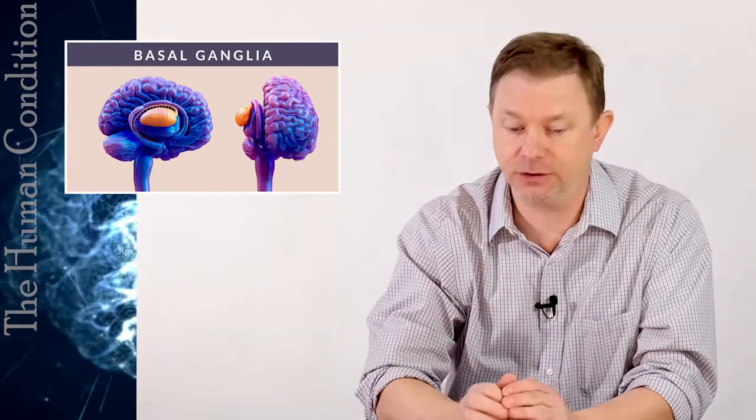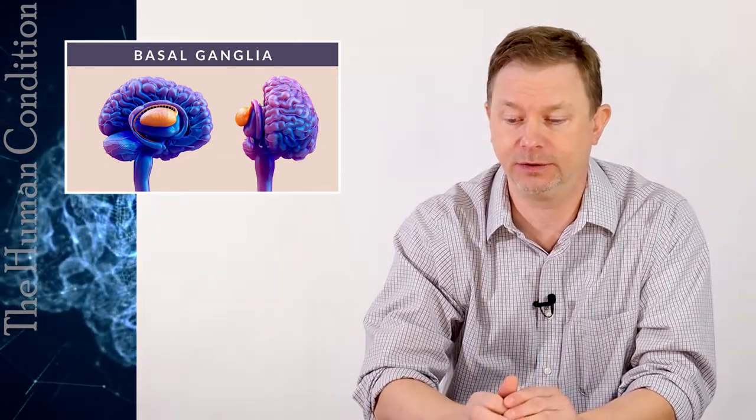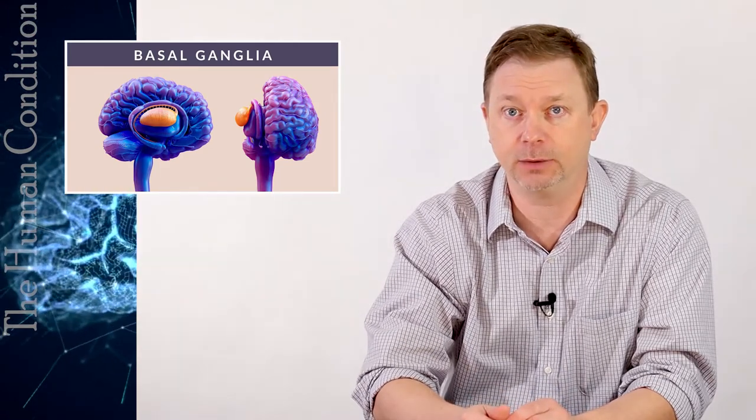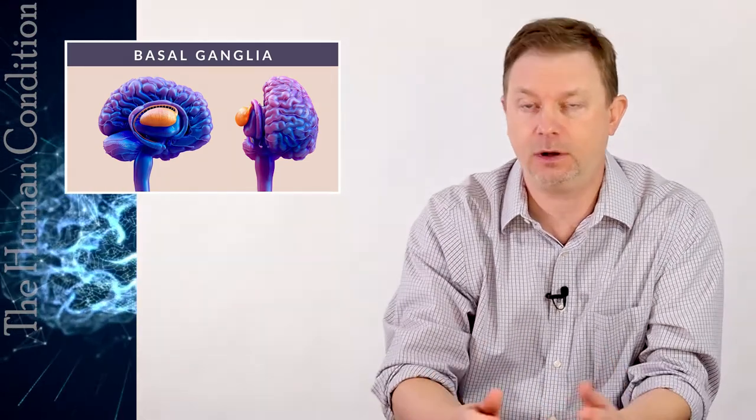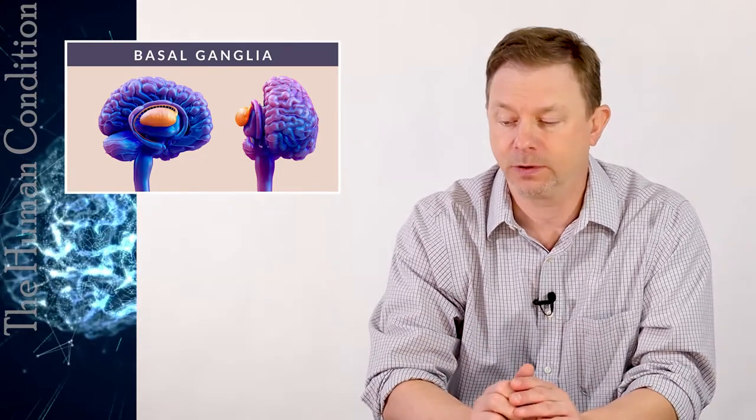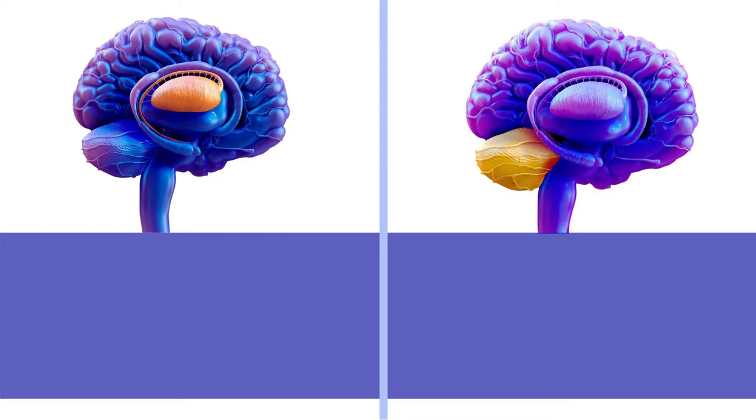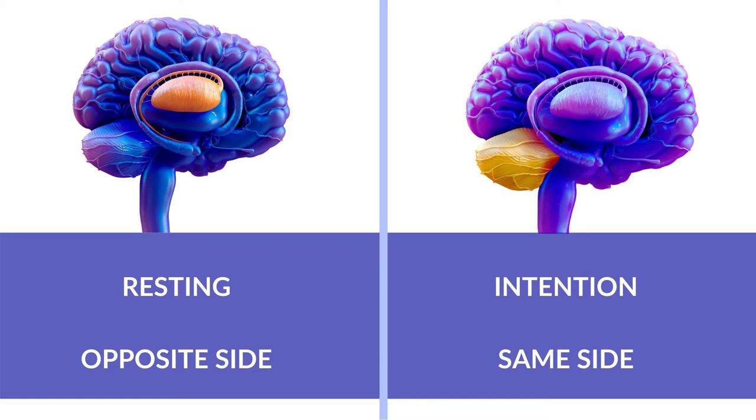Whereas there are intention tremors where if I actually do something like I point to an object and I shake, my right hand might be shaking. And that's usually due to a right, same side cerebellum dysfunction. And those tend to be easier to treat, not necessarily, but they're easier to treat and they're easier on a patient if you have an intention tremor, but not a resting tremor. So these are the hallmarks, but not always the case. These are the hallmarks of tendencies of the basal ganglia. Basal ganglia is resting, it's the opposite side. Cerebellum is intention. It happens when you do something and the closer you get to the target, the worse it gets. And that is the cerebellum on the same side, typically.